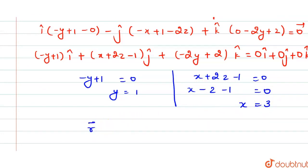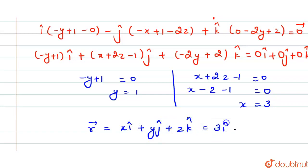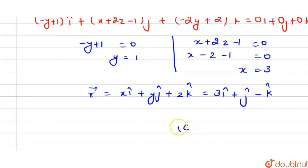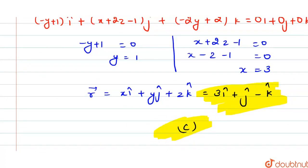Now my r vector, which is x i cap plus y j cap plus z k cap, will be 3 i cap plus j cap minus k cap. Checking the options, this is option C. So option C, which is 3 i cap plus j cap minus k cap, is the correct answer for this question. Hence we are done.